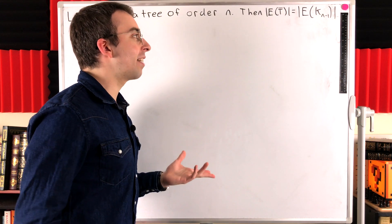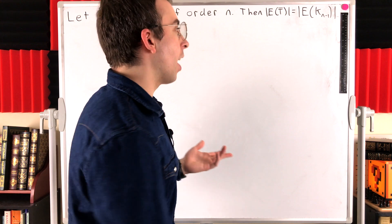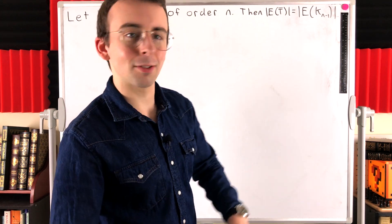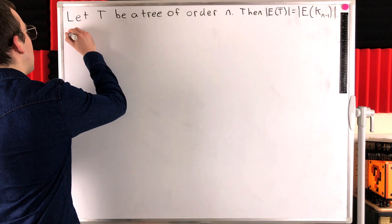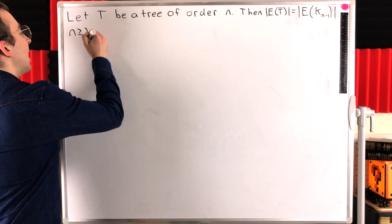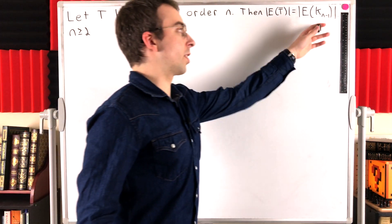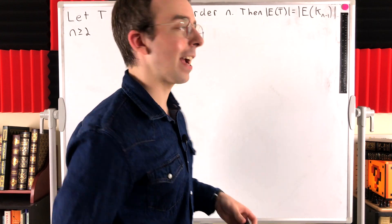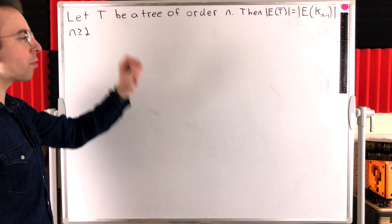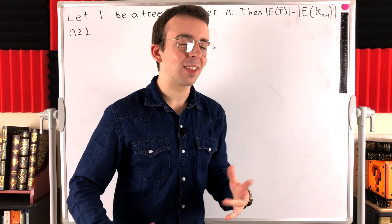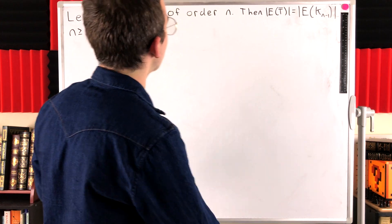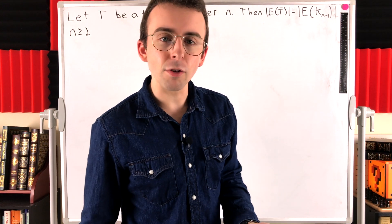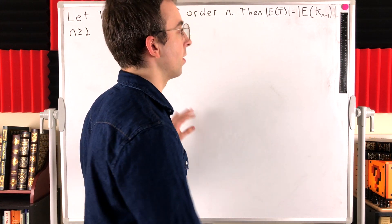Of course, n has to be at least two, otherwise K(0) or K(-1) doesn't really make sense. So we might want to specify n has to be at least two, that way we're talking about an actual graph that has a vertex. We'll prove this in today's Wrath of Math lesson — it's a pretty straightforward proof. For starters, let's just see what is the size of a complete graph on n minus one vertices.